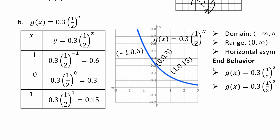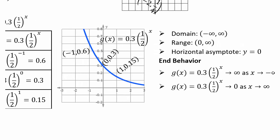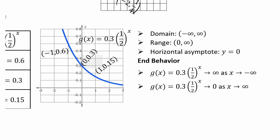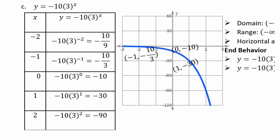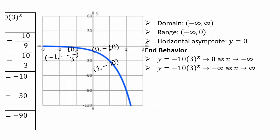For g(x) = 0.3·(1/2)^x, the shape is similar to (1/2)^x except the initial value is now 0.3 — at x = 0 you are at 0.3 instead of 1. When the coefficient is negative, like −10·3^x, the graph is reflected across the x-axis. The range changes to (−∞, 0), and as x → ∞, the y-coordinates shoot to negative infinity instead of positive infinity.